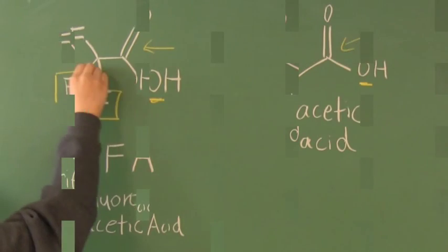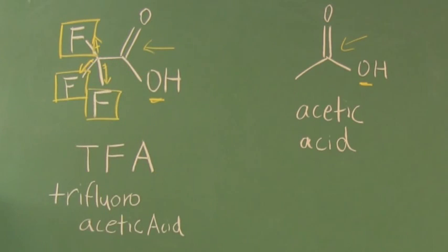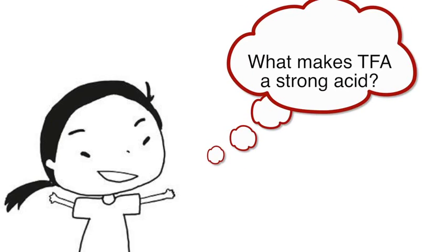Remember that fluorine is very electronegative. It withdraws the electrons from nearby carbon, making the carbon atom electron deficient. Can anyone tell what makes TFA a strong acid?